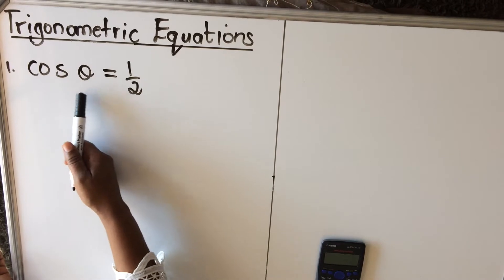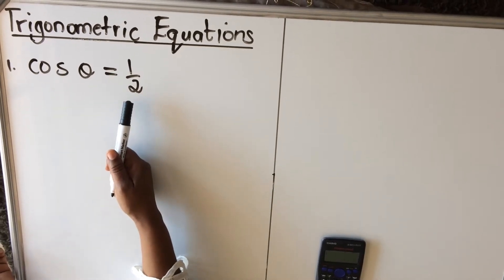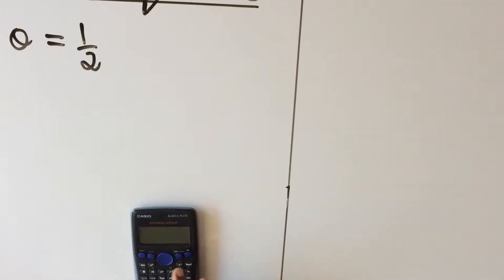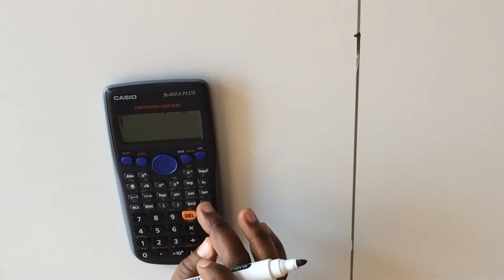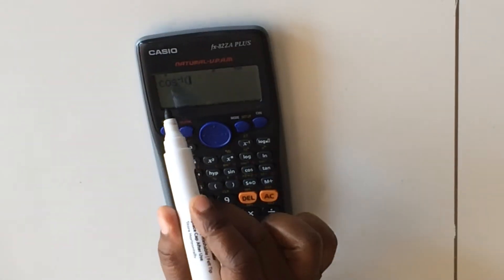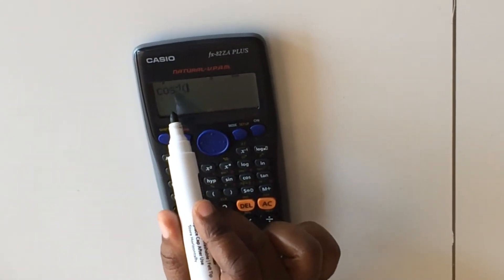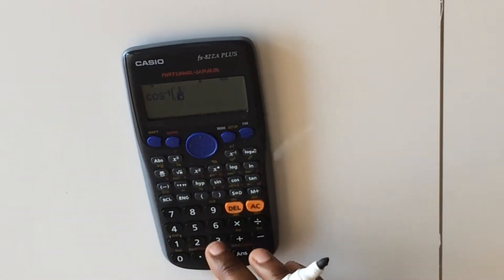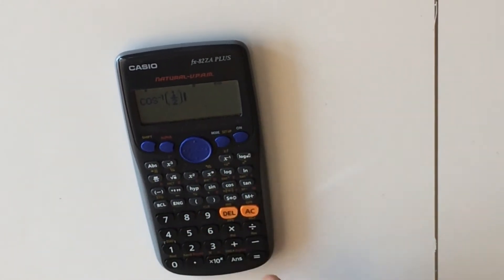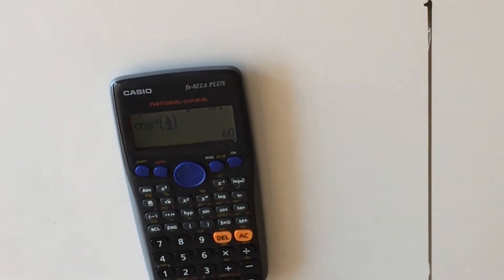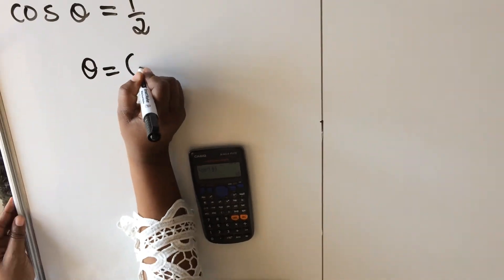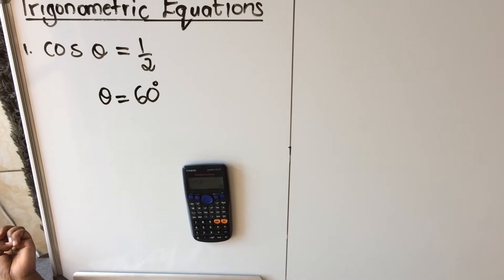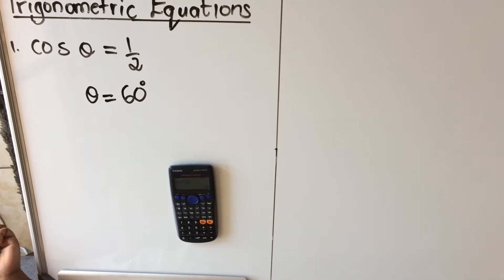Normally you would divide both sides, but we use a calculator to divide for us. You're going to go shift cos, then you see it has a minus one, which means we are dividing by cos. Then you go fraction 1 over 2 and close your bracket, and then you find that your theta is 60 degrees. That's it, let's look at the next example.